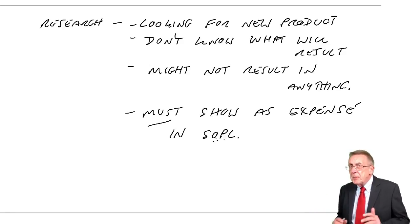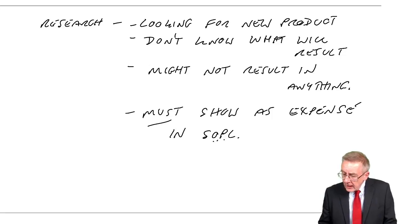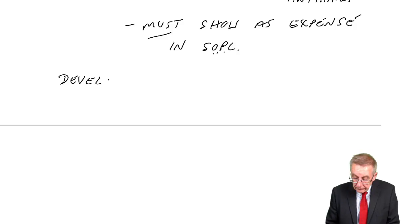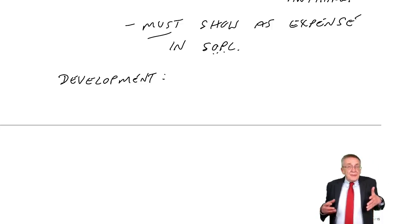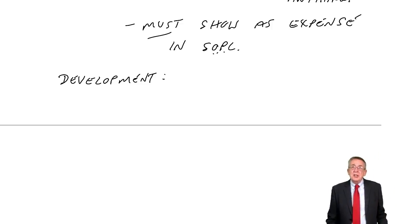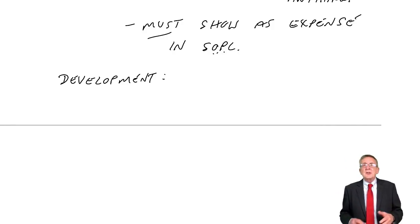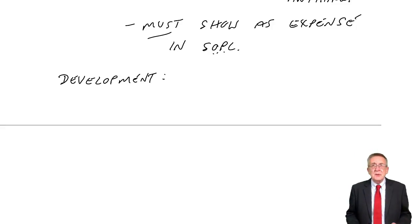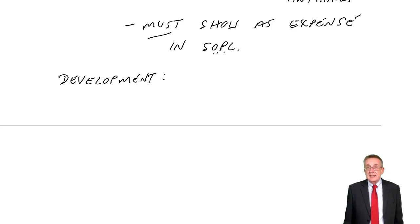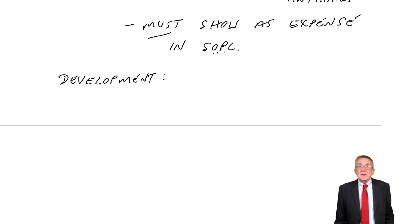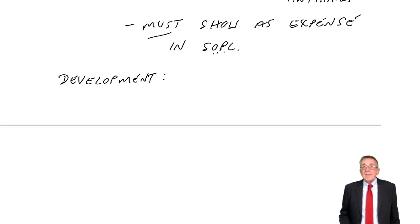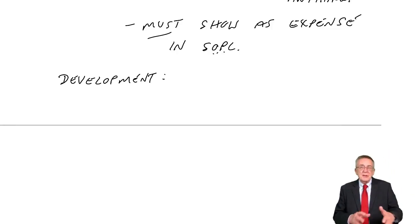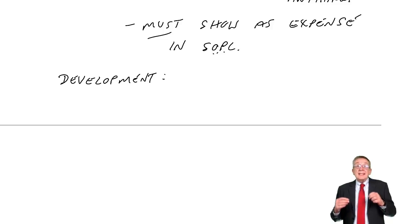That's research — when you're looking for a new product but you don't know what you'll end up with. The other bit is something called development expenditure. Suppose we have found a new drug — we know there's this new drug which will help the heart problem, we still need to do a bit more work sorting out tablet sizes and that sort of thing, but we know we've got this new product and we know we're going to be able to sell it. Or car makers: we've decided on a new car we're going to make — a car with eight doors. It's not finished yet, but we know what the product's going to be, we know we'll be able to make it and sell it. That is development.